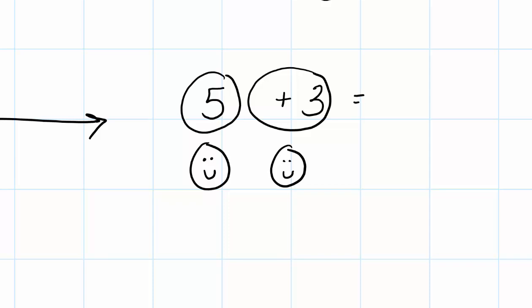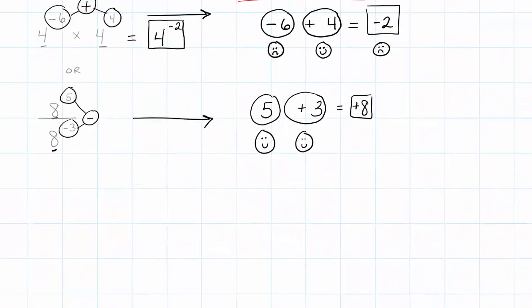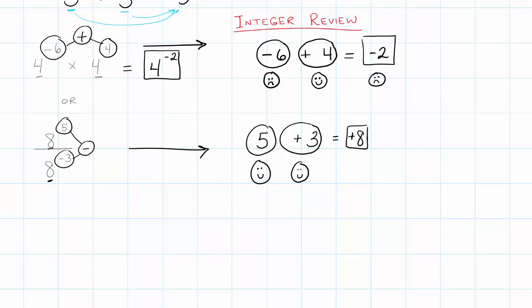So in this particular case, I've got 5 positives and 3 positives, which gives me a total of 8 positives. And that gives us our exponent that we need in order to simplify this expression. So we're going to say that 8 to the 5th power divided by 8 to the negative 3rd is equal to 8 to the 8th power.